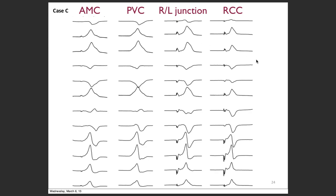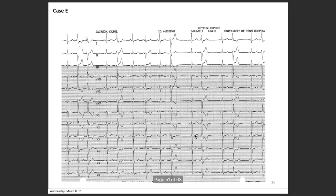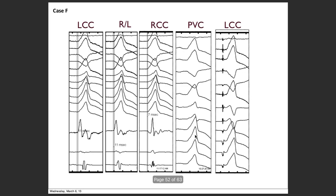The named regions include: aortomitral continuity, right coronary cusp, and the right-left cusp junction. When examining the ECG, also look at the V2 ratio along with lead 1 to differentiate possible origins. The different cusp origins — left coronary cusp, right-to-left summit, right coronary cusp — each have characteristic ECG patterns.